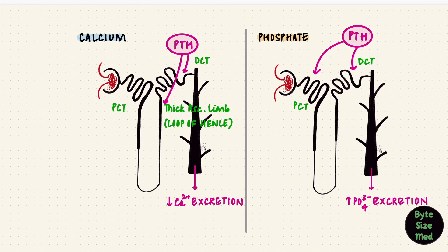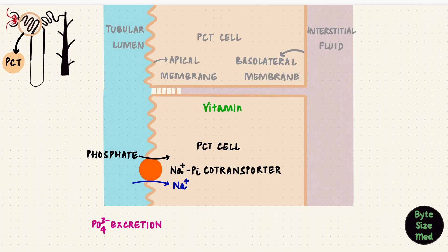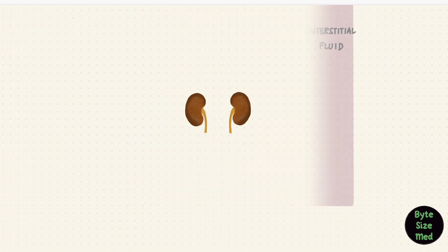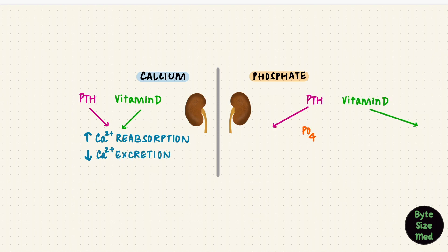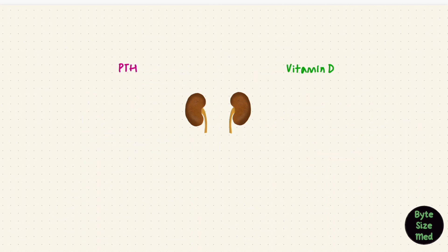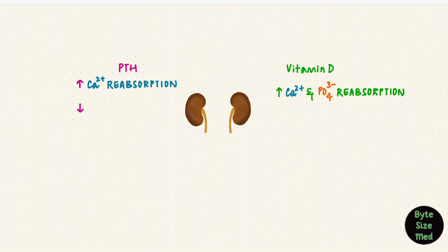PTH does not work on the proximal tubule for calcium. Vitamin D, on the other hand, upregulates the sodium-phosphate transporters, increasing phosphate reabsorption and reducing its excretion. For calcium, both PTH and vitamin D increase calcium reabsorption and reduce its excretion — they differ in their effects on phosphate. Vitamin D increases phosphate reabsorption while PTH reduces it. An easy way to remember: vitamin D increases both calcium and phosphate reabsorption — it likes both. PTH increases calcium reabsorption but reduces phosphate reabsorption — it loves calcium and hates phosphate.